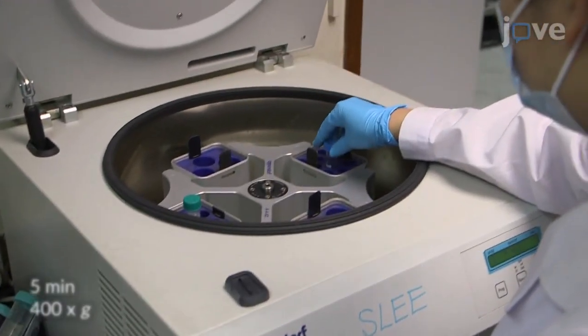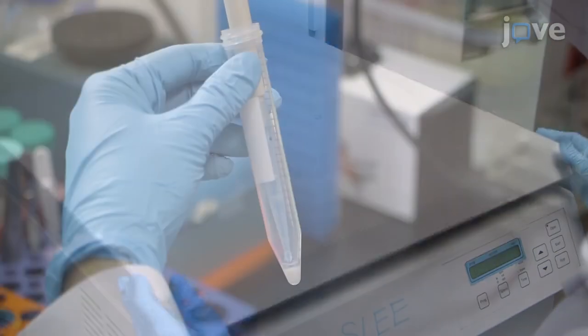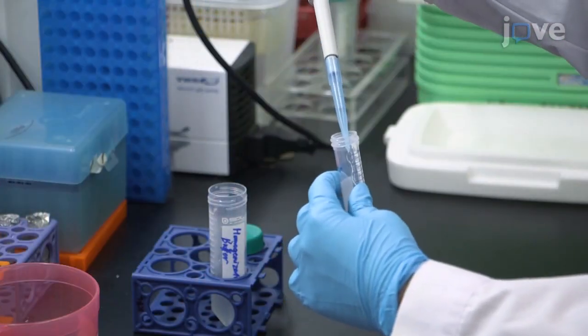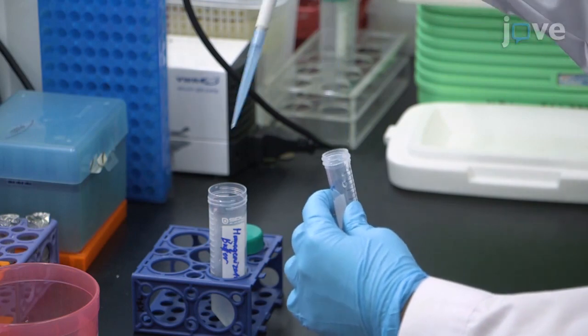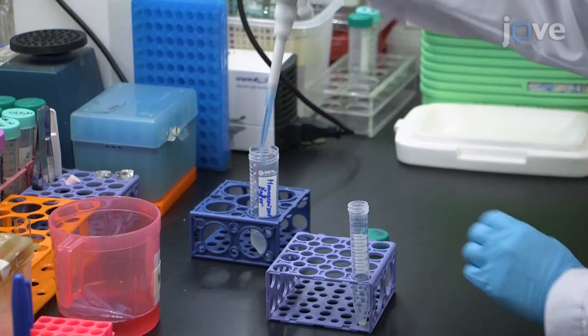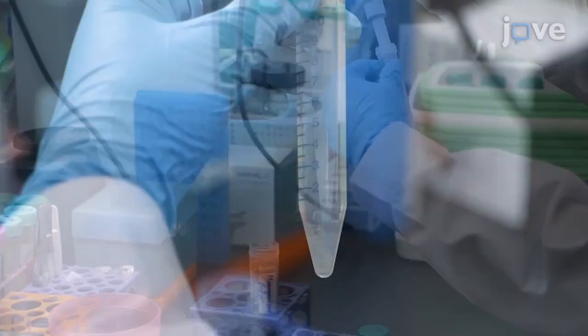Pellet the cells by centrifugation using a swing bucket rotor. Discard the supernatant and re-suspend the cell pellet gently in 5 mL of homogenization buffer. Collect the cells again by centrifugation and re-suspend the cell pellet in 1 mL of homogenization buffer.